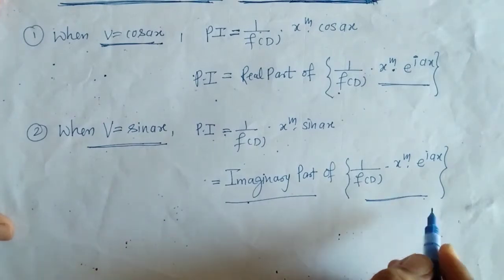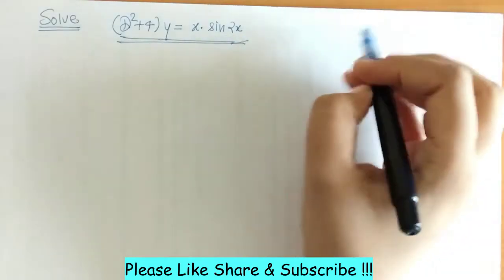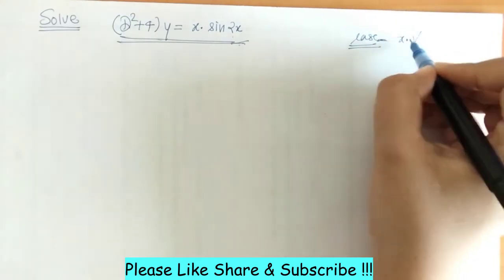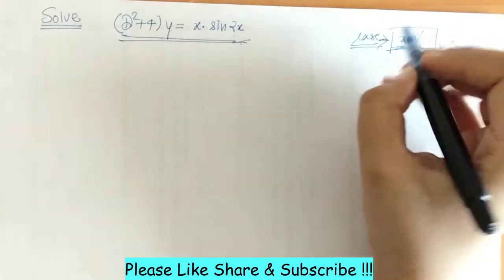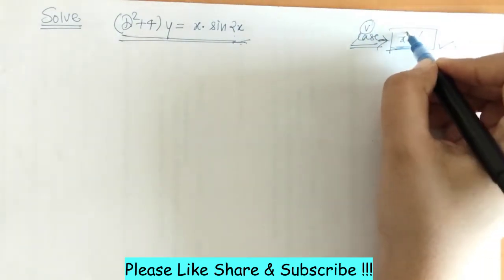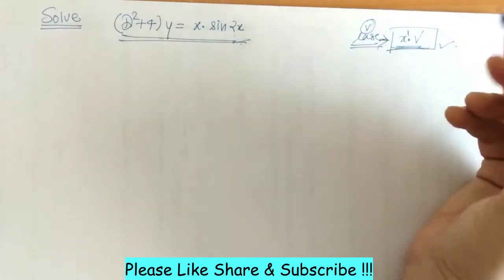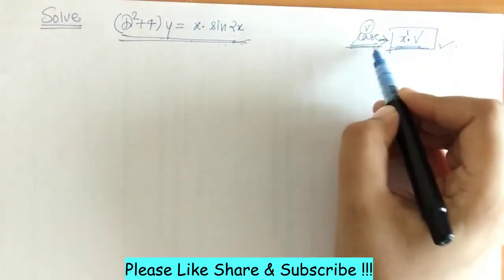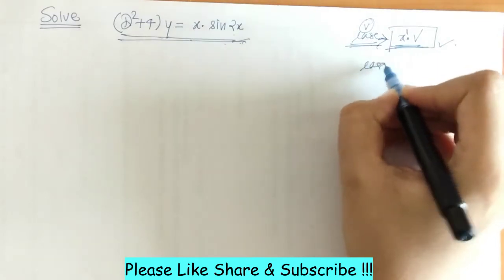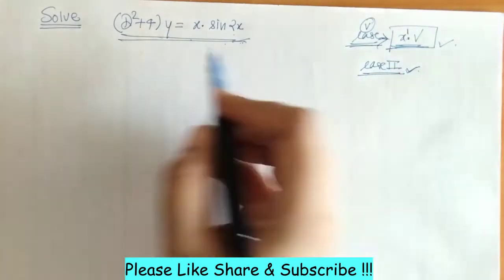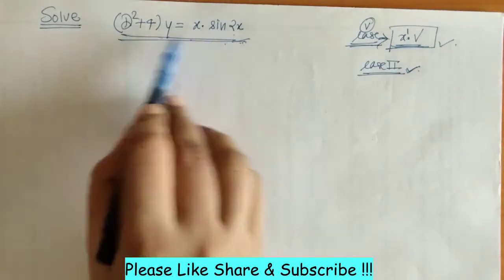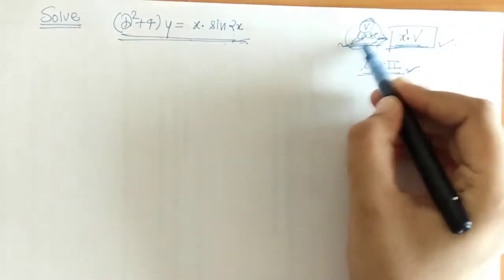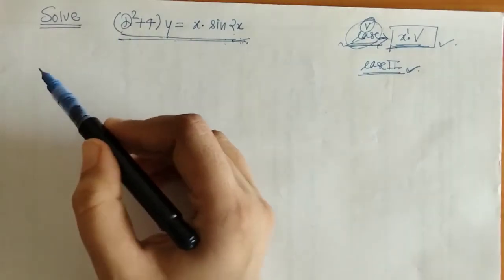Now let's proceed with the example. We can check that we could solve this differential equation by Case 5 also, since the x index is 1. However, when we use Case 5 we have to use Case 2, and Case 2 fails here. So some complications arise in solving by Case 5, so it is better to use Case 6 using Euler's formula.